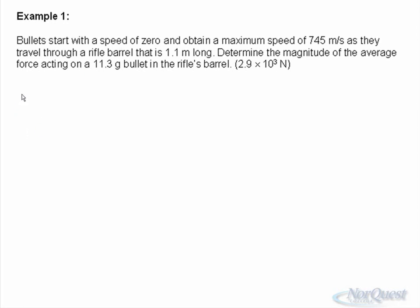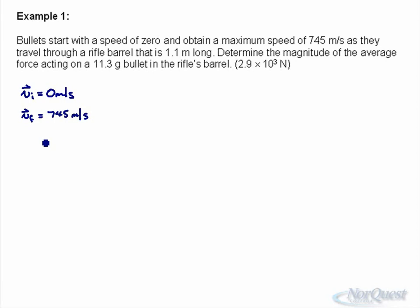The bullet starts with a speed of 0, so I'm labeling my initial velocity as 0 meters per second. It obtains a maximum speed of 745, so my final velocity is 745 meters per second. It travels through a rifle barrel that is 1.1 meters long, so we have a displacement of 1.1 meters. Notice I'm putting everything in the proper units as I write them down.